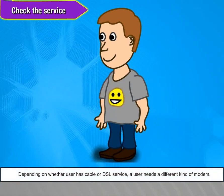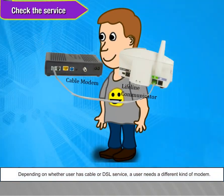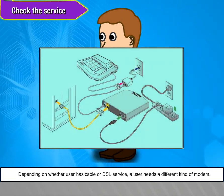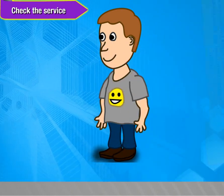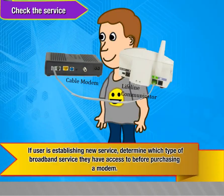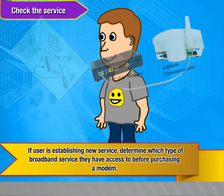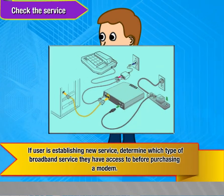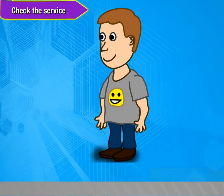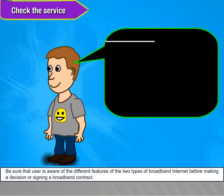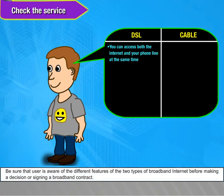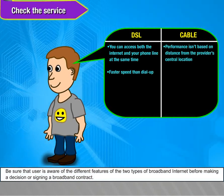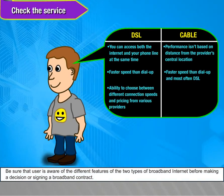Check the service: Depending on whether the user has cable or DSL service, a different kind of modem is needed. If establishing new service, determine which type of broadband service is available before purchasing a modem. Be sure to be aware of the different features of the two types of broadband internet before making a decision or signing a broadband contract.